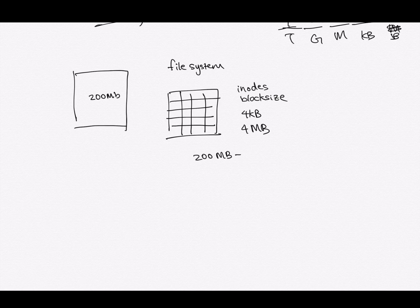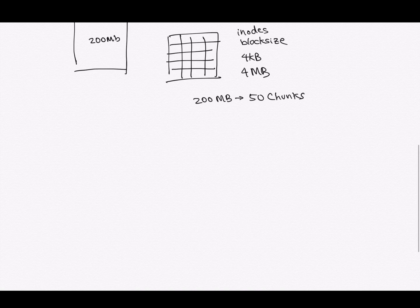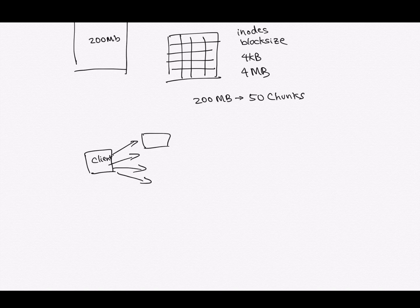But handling 4 kilobyte chunks would take forever and probably crash our servers because it's handling too many files. So we're going to make this around 4 megabytes, but in our use case we're going to make it 2 megabytes to make the math a little easier. So a 200 megabyte file can be turned into 100 chunks using 2 megabyte chunks, or 50 chunks using 4 megabyte chunks. The client would then send a chunk to individual web servers.